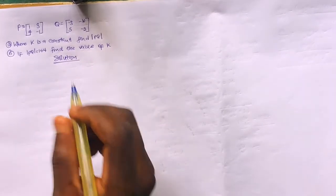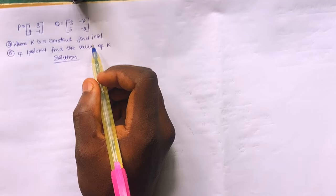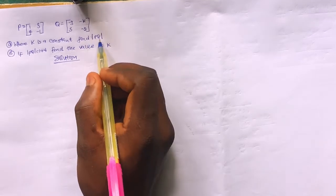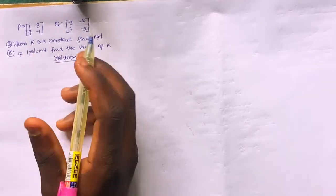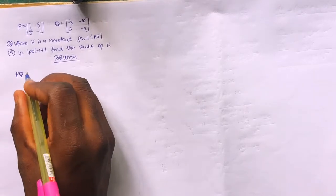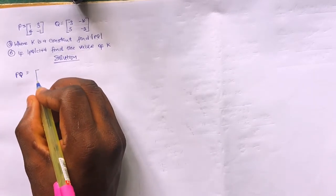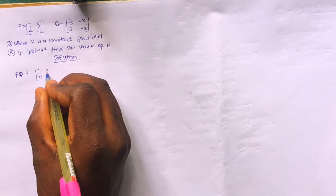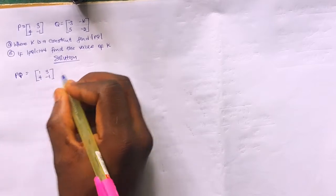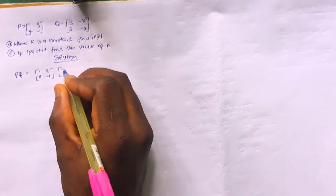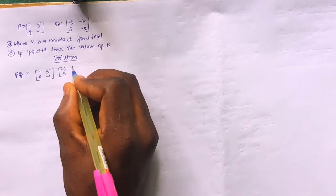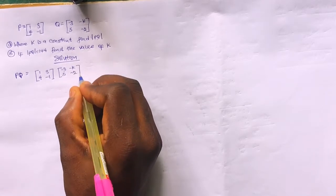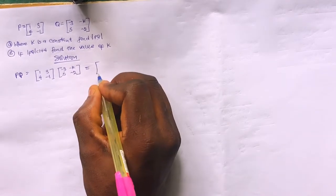So we are asked to find the determinant of PQ. That means we first need to find the product matrix PQ — multiplying P by Q. We have the matrix with entries 1, 4, -3, -1 multiplied by the matrix with entries -3, 5, -k, -2.